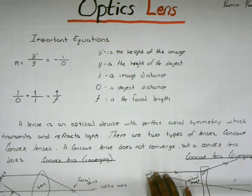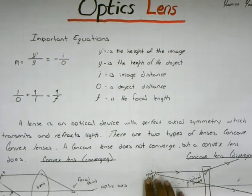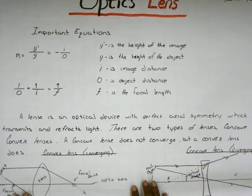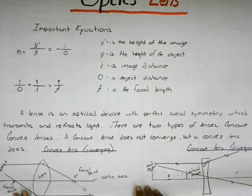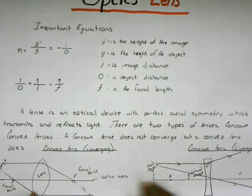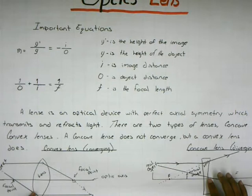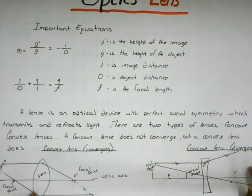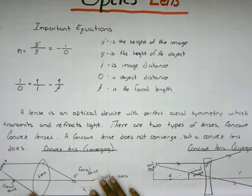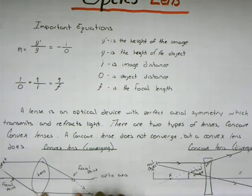There are two types of lenses: concave lenses and convex lenses. A concave lens, this one over here, doesn't converge—it diverges. But a convex lens does converge.